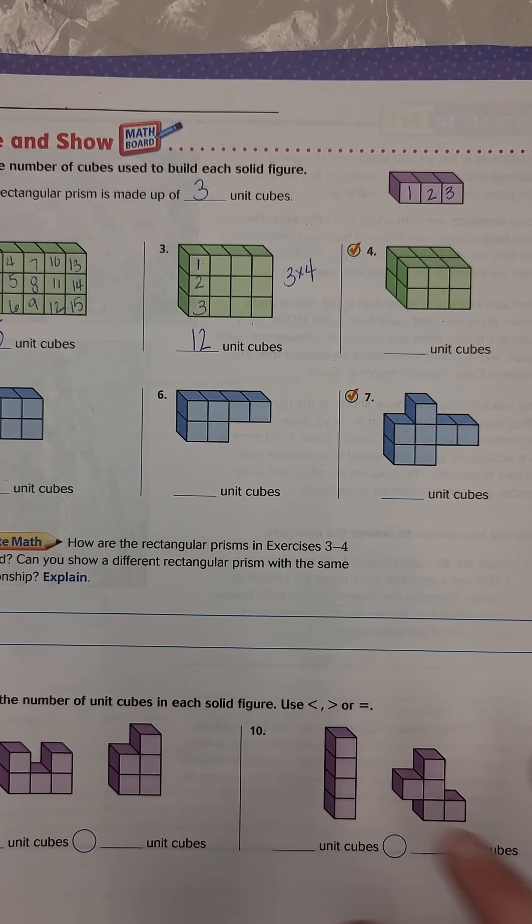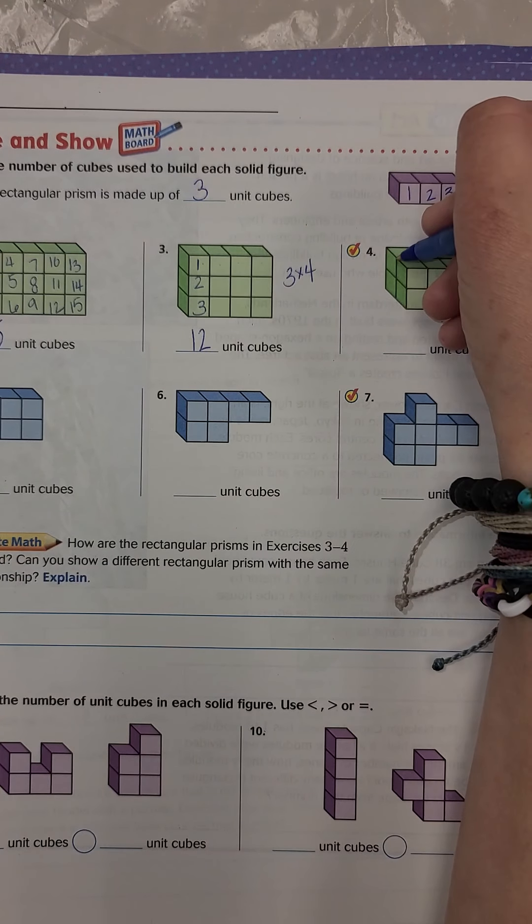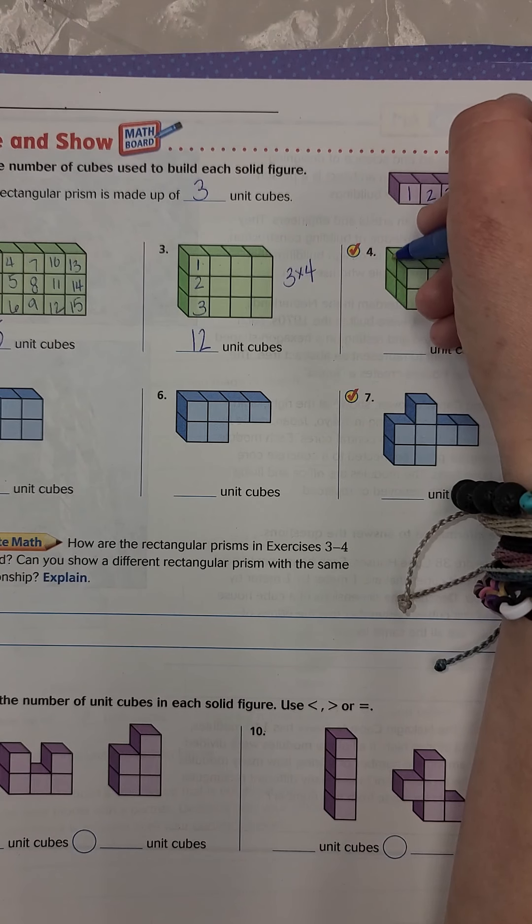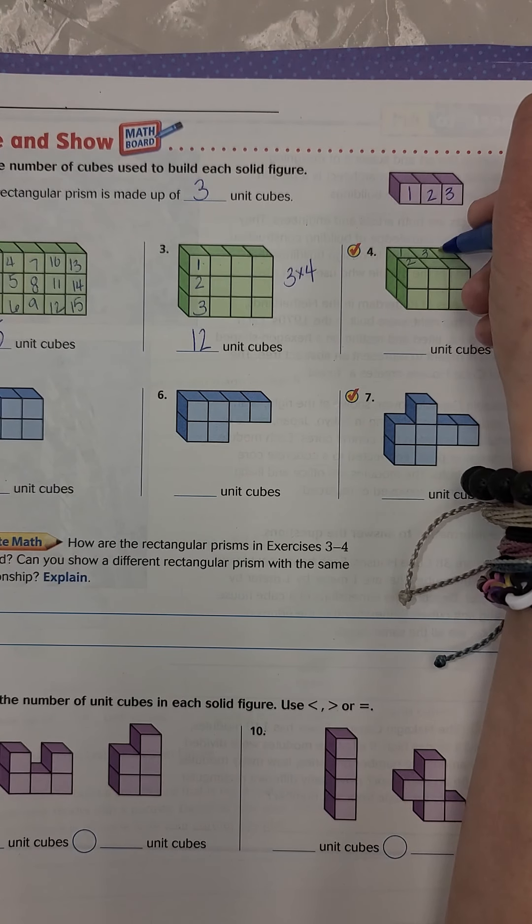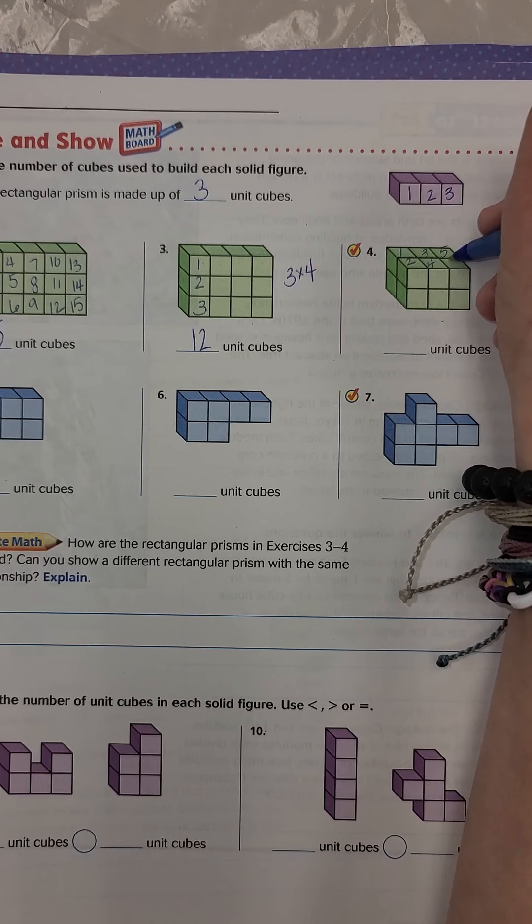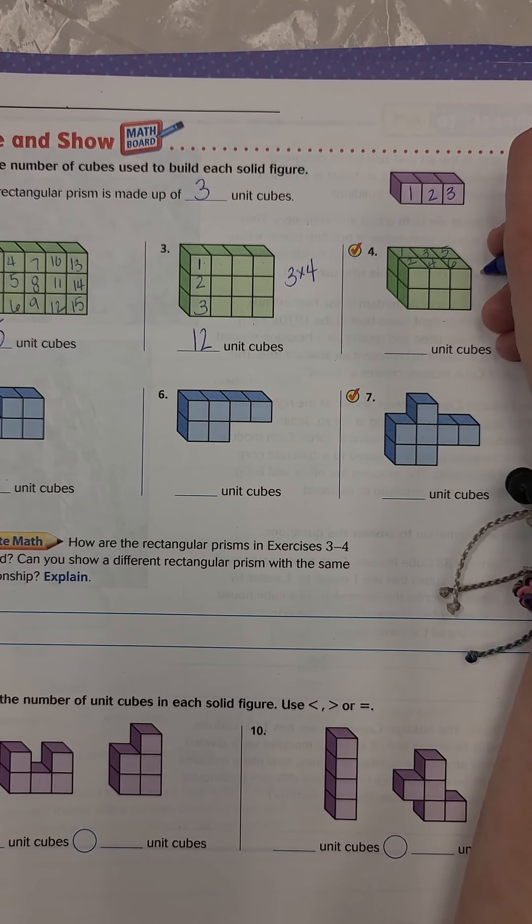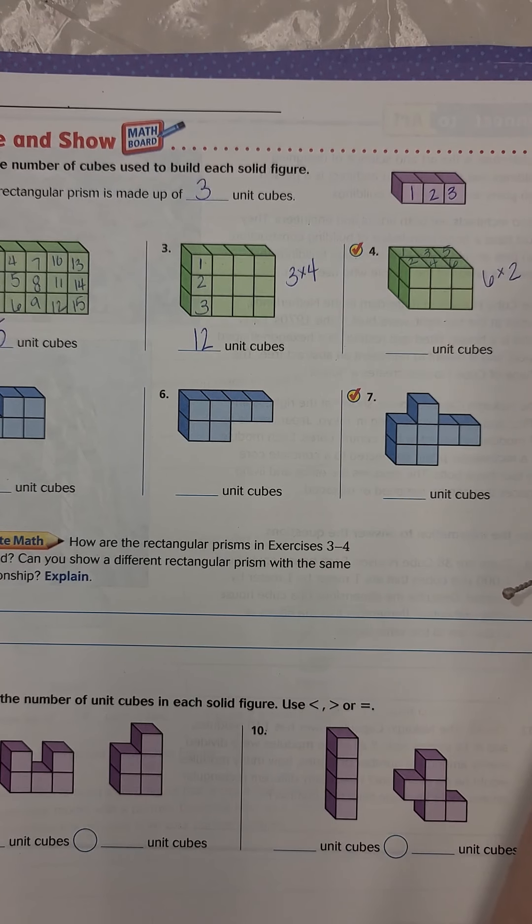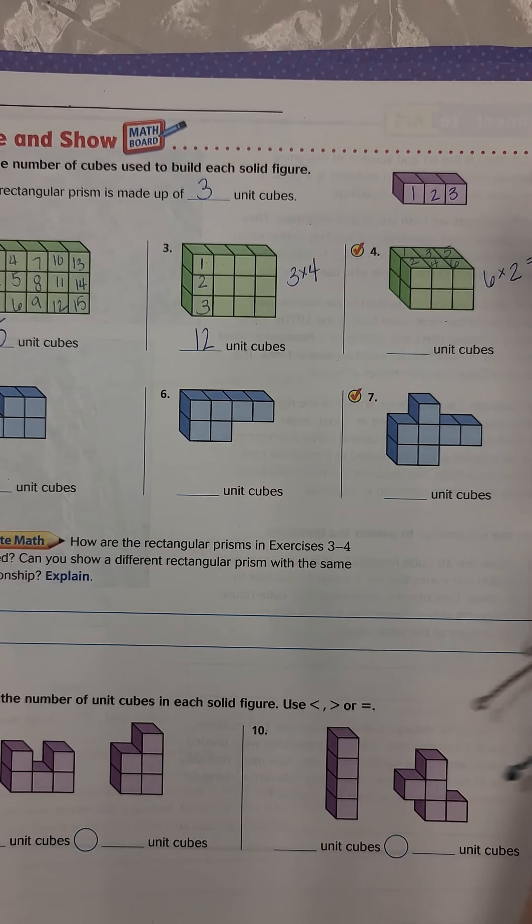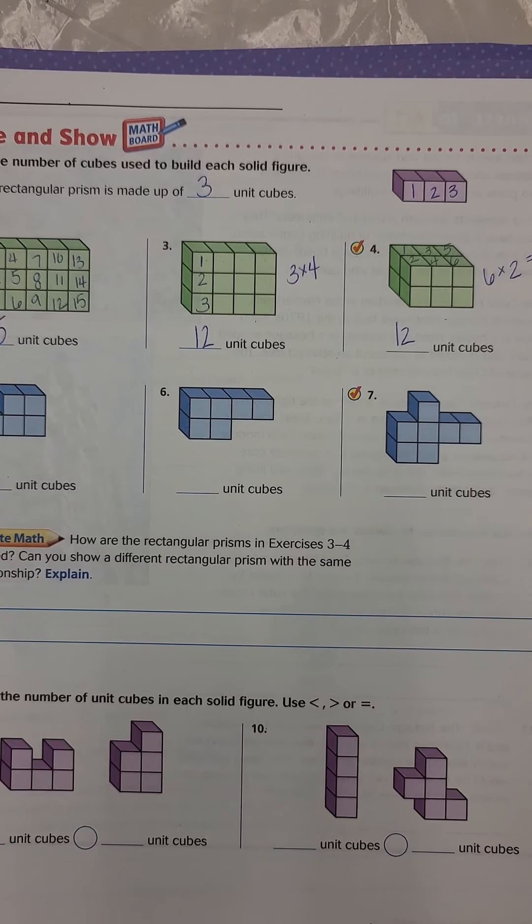So there would be 12 unit cubes in that prism. All right. So let's look at this next one. This one is doubled up. So we know that they're stacked on top of each other. So we have one, two, three, four, five, six. And if there's two rows of all that, so we have six times two sections, it was going to give us 12. So we would have 12 unit cubes.